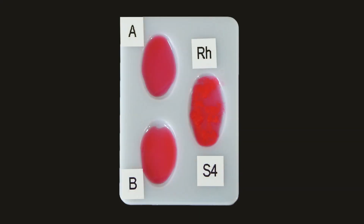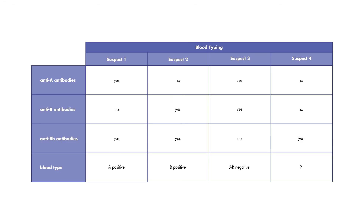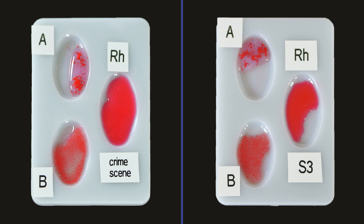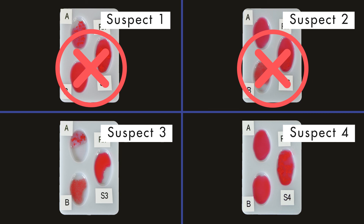However, we should test the blood of suspect 4 just to be sure. Neither the cells in well A nor the cells in well B show a reaction. However, the cells in the Rh well are sticking together. We conclude that the blood type for suspect 4 is O positive, which does not match the blood found at the crime scene. The fact that the blood type of suspect 3 matches the blood found at the scene is not conclusive proof that he took the sandwich.